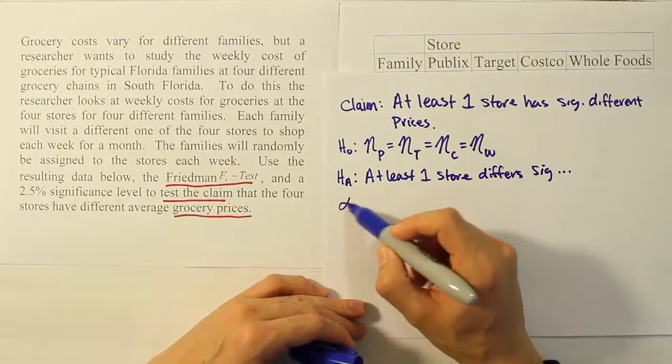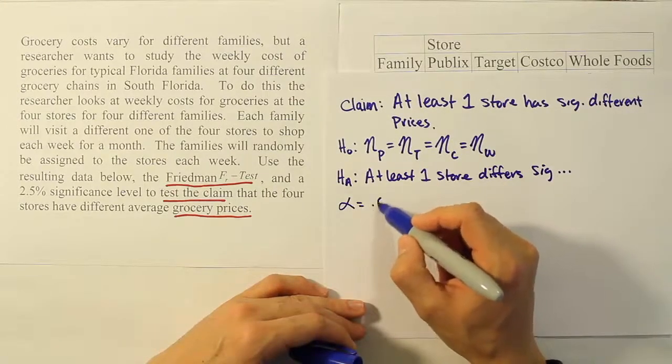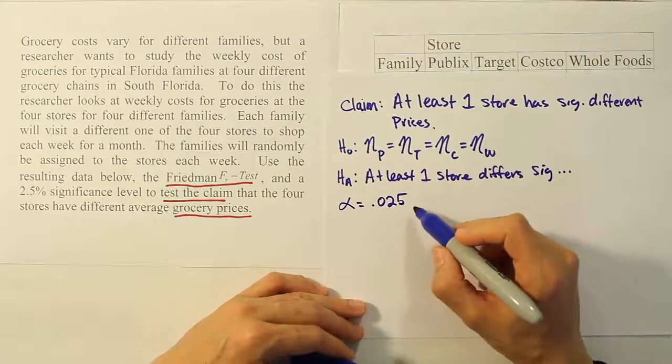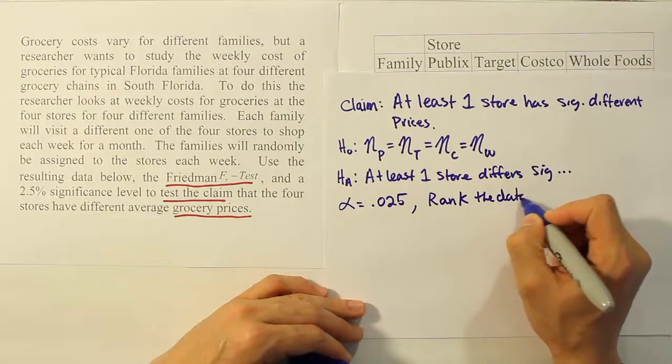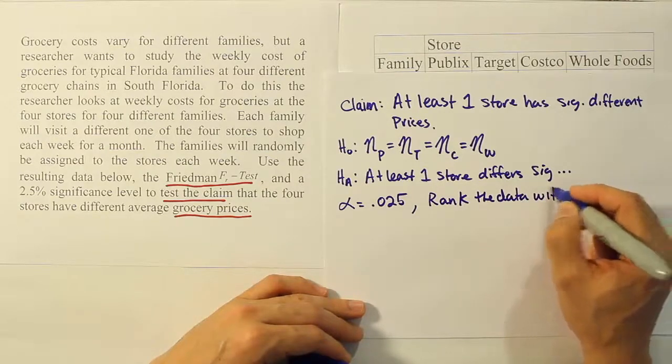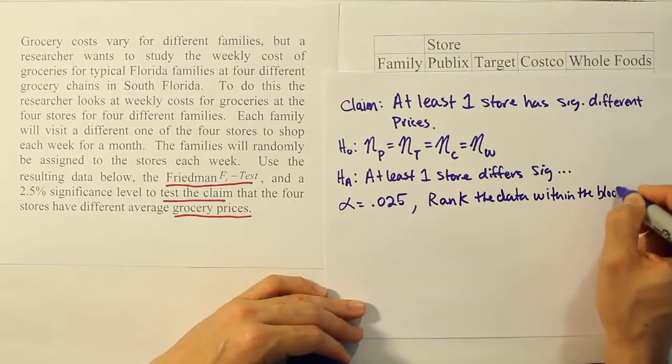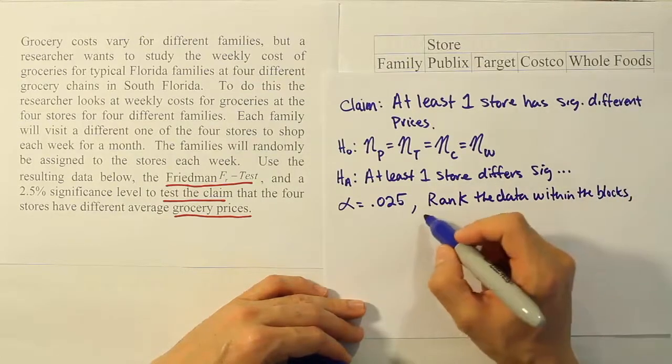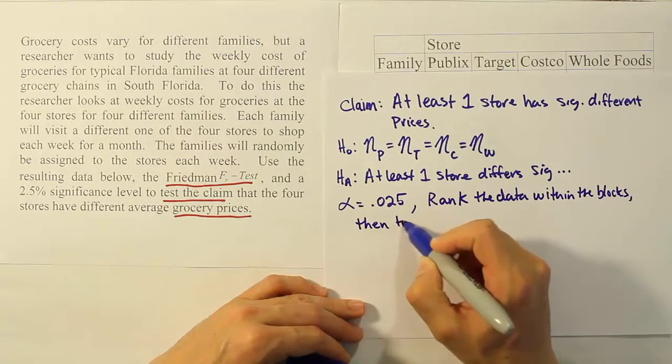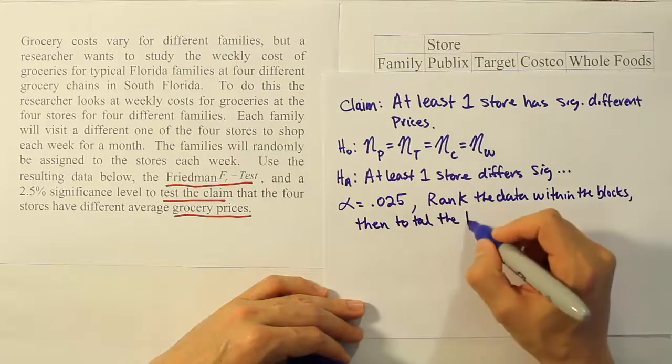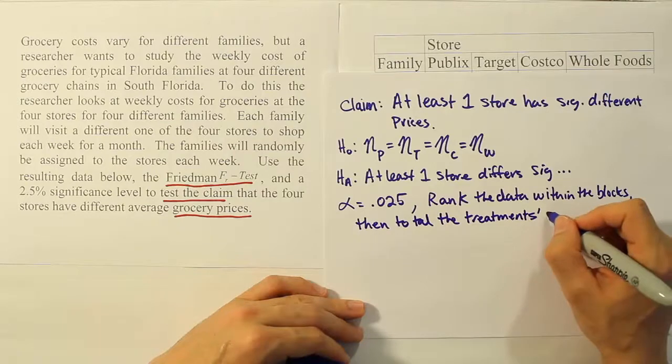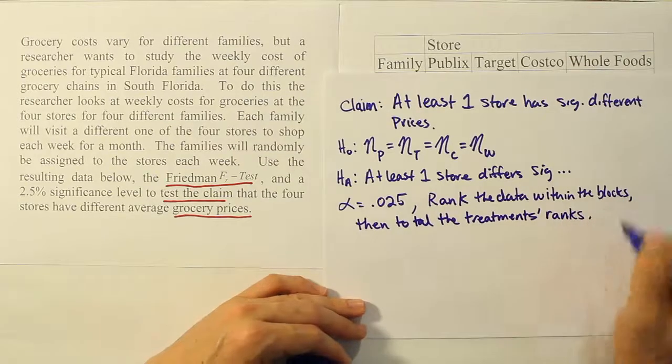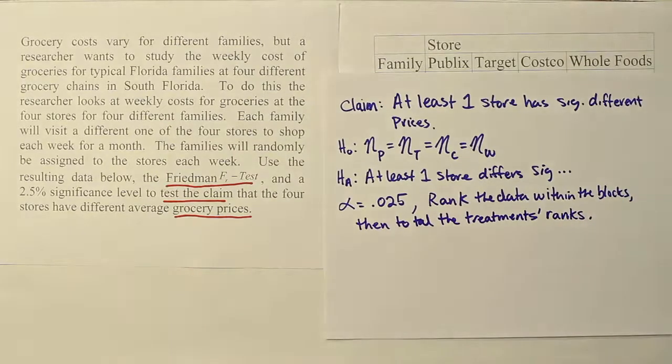From there, let's write down our alpha value. Our alpha is 2.5% or 0.025. We'll need that later. Then we want to rank the data within the blocks, then total the treatment's ranks. So for each treatment, we're going to total its ranks when we're done. So let's do that ranking procedure.